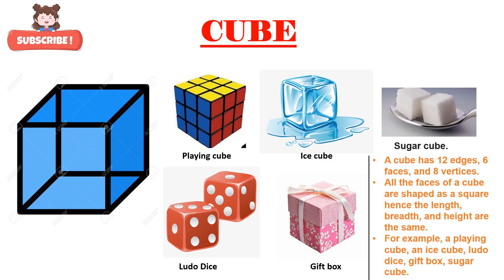The first 3D shape that we are going to learn is a cube. C-U-B-E, cube. Now let's learn the properties of a cube. A cube has 12 edges, 6 faces, and 8 vertices. All the faces of a cube are shaped as a square, hence the length, breadth, and height are the same. Some examples are a playing cube, an ice cube, a ludo dice, a gift box, and a sugar cube.